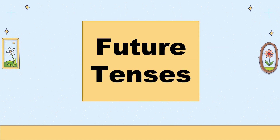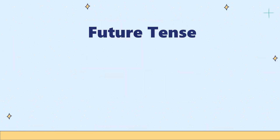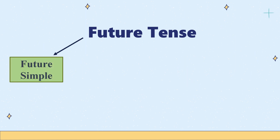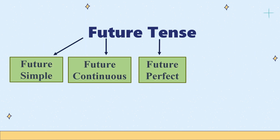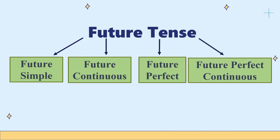The last one is future tense. Future tense is also divided into four categories: one, future simple; two, future continuous; three, future perfect; and fourth, future perfect continuous.